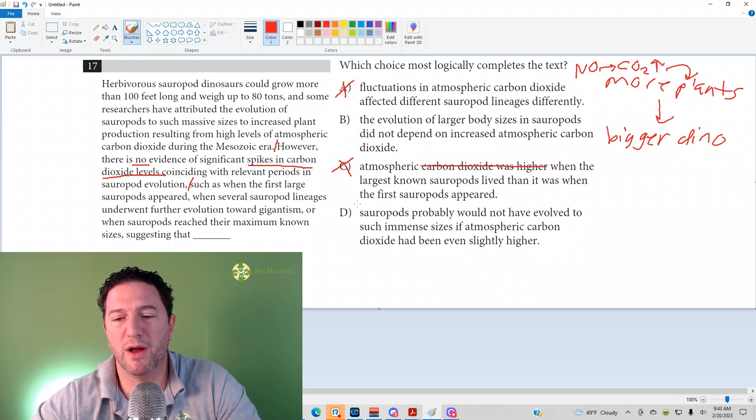Answer choice D: Sauropods probably would not have evolved to such immense sizes if atmospheric carbon dioxide had been even slightly higher. That would be like there's no relation between the carbon dioxide levels and the sizes of the sauropod. That's what it seems to be saying. D is gone. B is your answer.